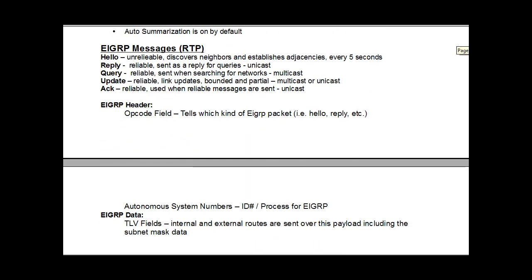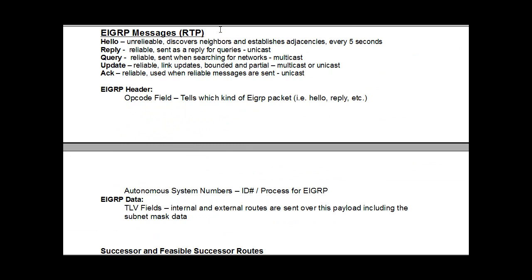The next section covers EIGRP messages and RTP. EIGRP sends out hellos every five seconds — that's an unreliable protocol. It also has replies, which are sent in reply to queries; queries are the next type of message; updates; and ACKs, or acknowledgements. Some of these are multicast and some are unicast, and some are reliable while some are unreliable.